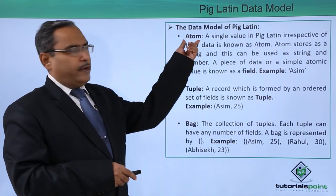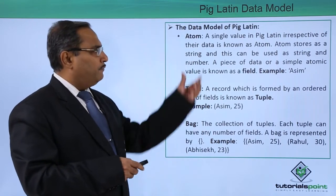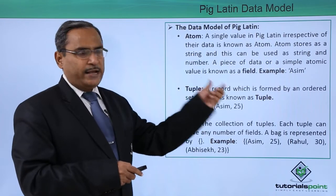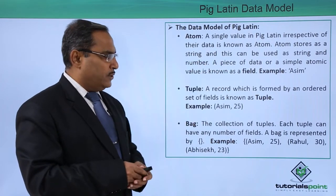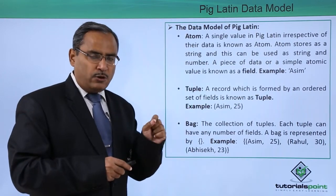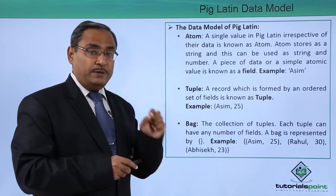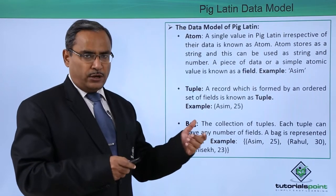At first we are starting with atom. A single value in Pig Latin irrespective of the data is known as atom. Atom stores as a string and this can be used as string and number. Atom is a single value at a time and it will be stored in the form of string and can be operated as a string or a number.